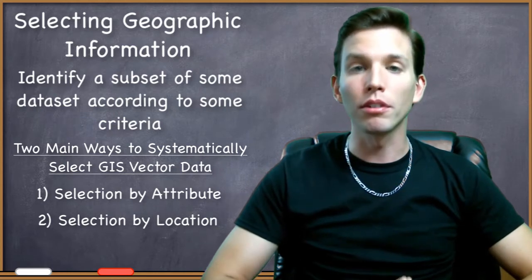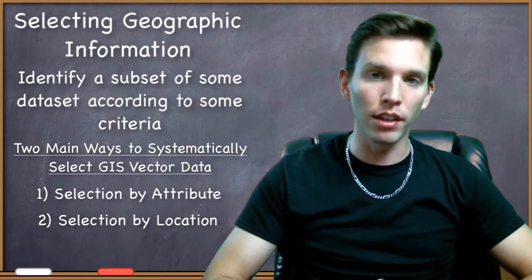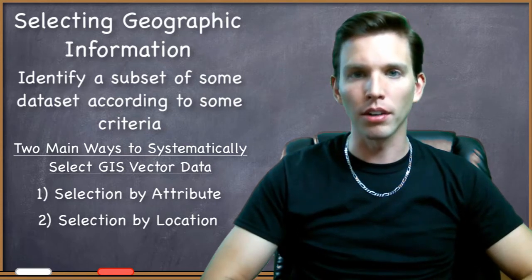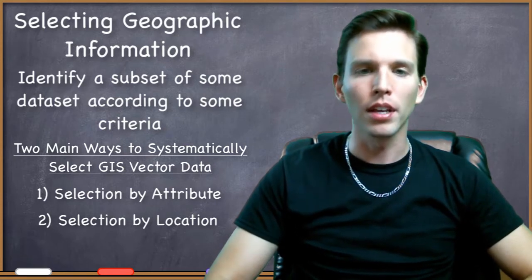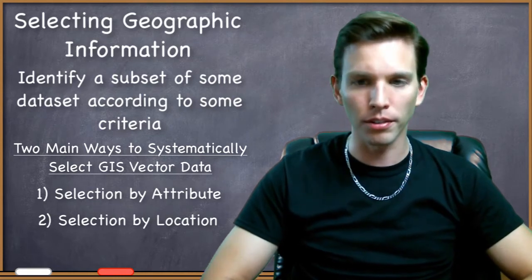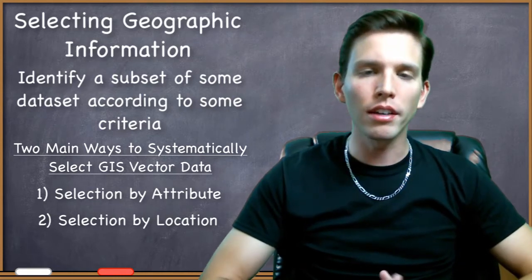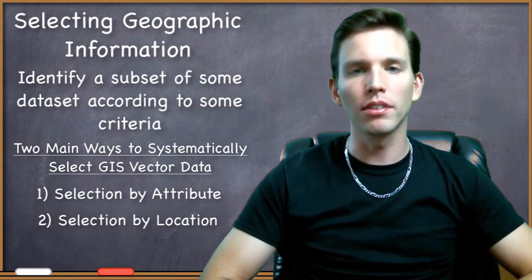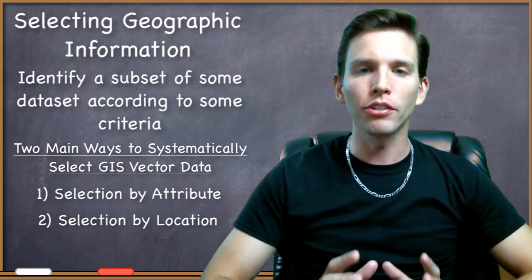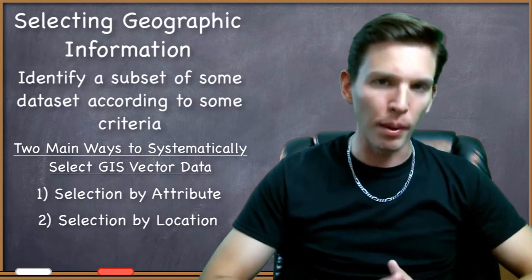But what I want to focus on in this video lesson and the next are ways of systematically selecting GIS data. Our two major ways are then by attributes and by location. Querying the aspatial attributes of the data through the attribute table is called selection by attribute.